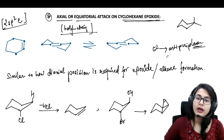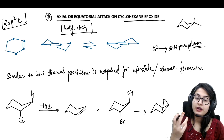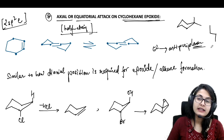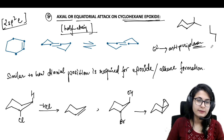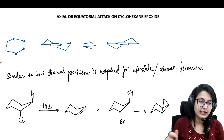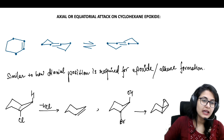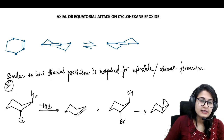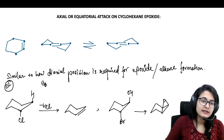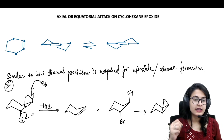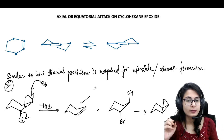An anti-periplanar position is when two of your leaving groups are at an opposite angle — that is 180° to each other. This is what is anti-periplanar. For E2 elimination, the base takes away the proton which should be anti-periplanar to the Cl, and hence you get the double bond.